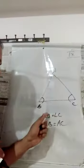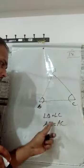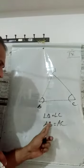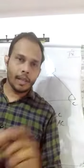That is sides. Suppose AB equals AC, then the opposite angles are also equal.